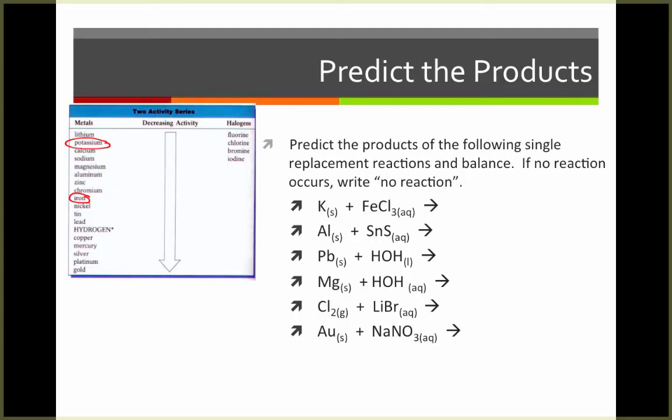In this case, potassium will displace iron, giving us solid iron, solid because it's a metal, and potassium chloride. Since potassium has a positive one charge and chlorine has a negative one charge, we get KCl. And because it's an ionic compound, it's going to be a solid.